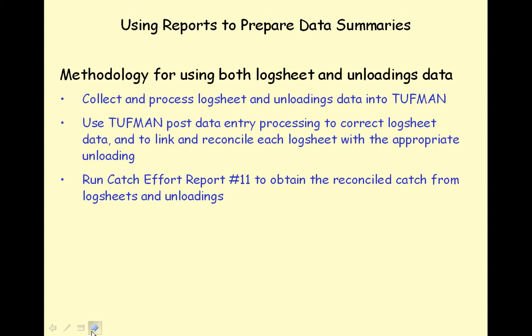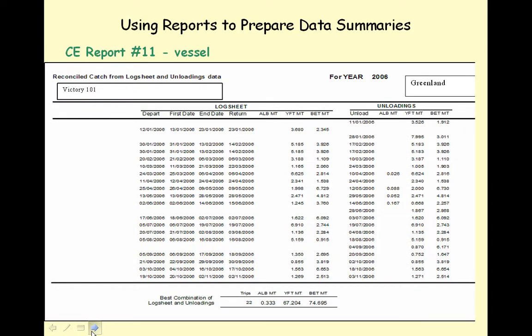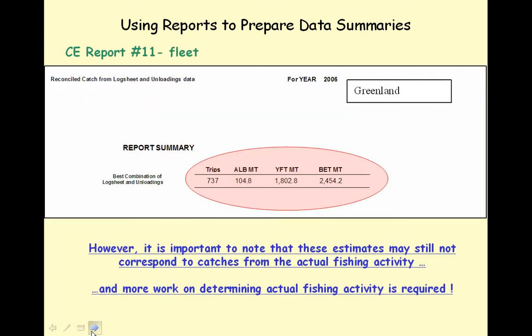Toughman Catch and Effort Report Number 11, Reconciled Catch from Log Sheets and Unloadings, shows the best combination of log sheets and unloadings data. This report uses log sheet catches in the absence of unloadings data for that trip, and unloadings in the absence of a log sheet for that trip. The report is produced for a vessel nationality and a calendar year, and produces a list of trips with log sheets and unloadings data for each vessel in the fleet. At the bottom of the page for each vessel, a summary of the total estimated catch by species and total trips is produced according to the best combination of log sheet and unloadings data. At the end of the report, a summary of the total estimated catch by species within the selected fleet is produced.